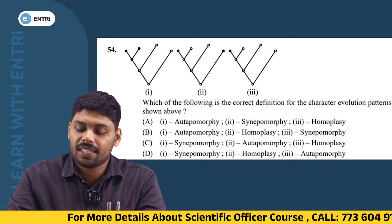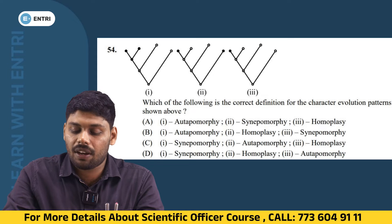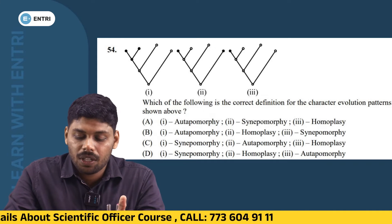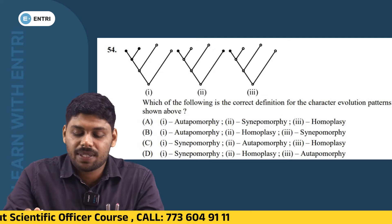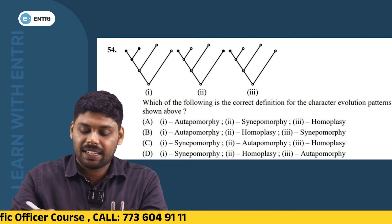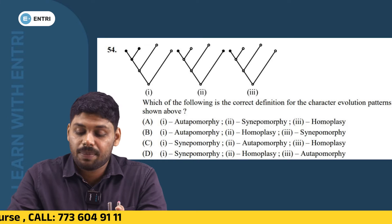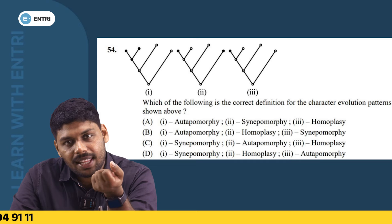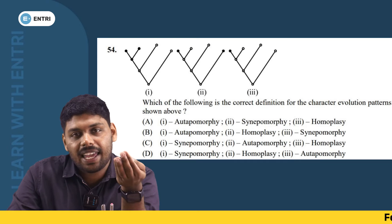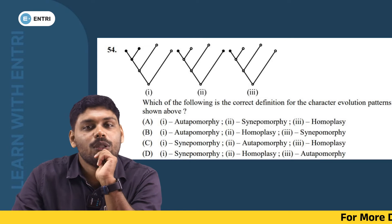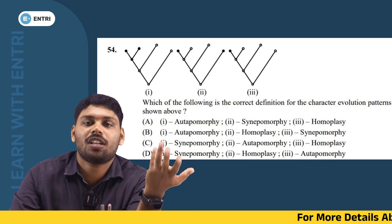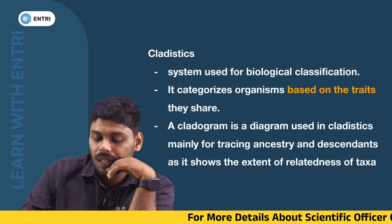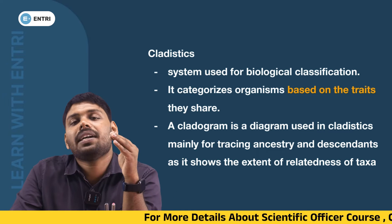Which of the following is the correct definition of the character evolution pattern shown above? There are three diagrams. This is synapomorphic. This is homoplasic. This is the correct definition of the diagram — this is what we are looking for. What is synapomorphic? This is what we know.